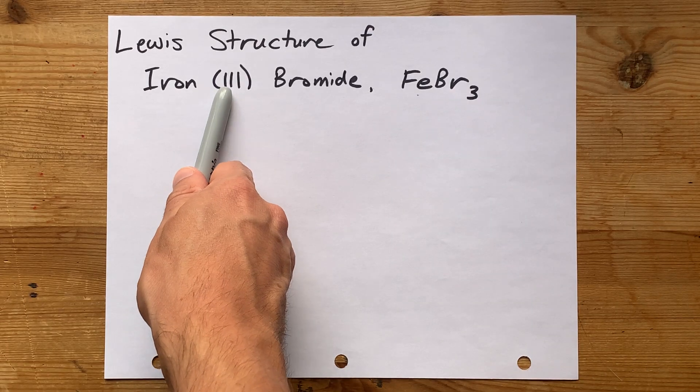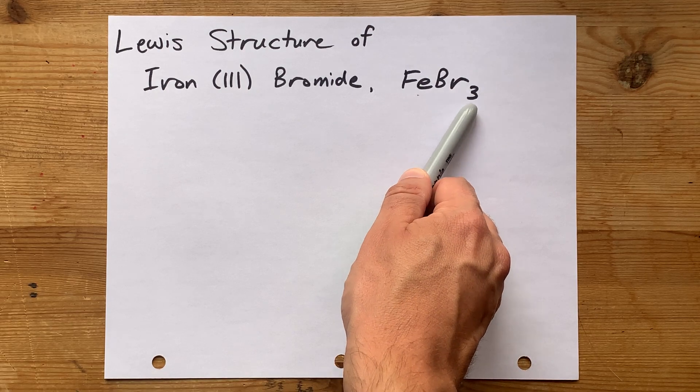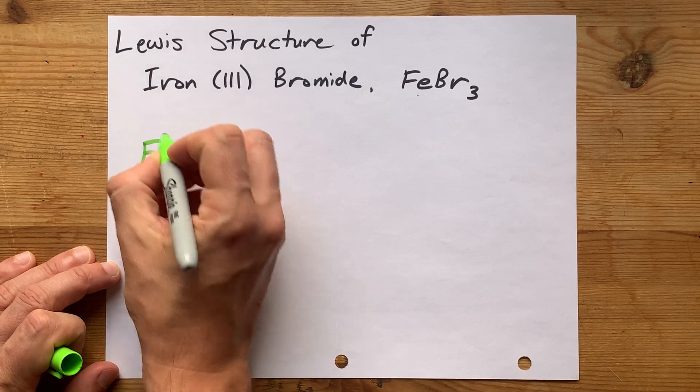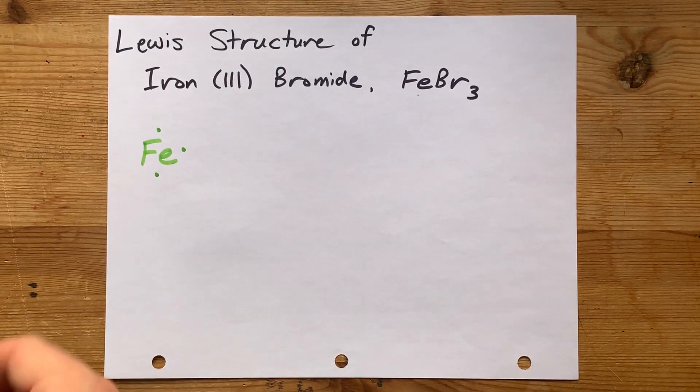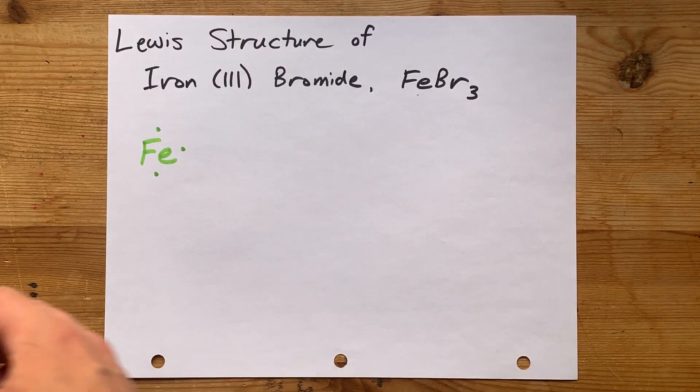In this case, it has a charge of plus 3. That's written here in the formula. It's also alluded to here. What that means is we're going to start with Fe having 3 valence electrons. It's the loss of those 3 electrons that will give it the positive 3 charge in the end.